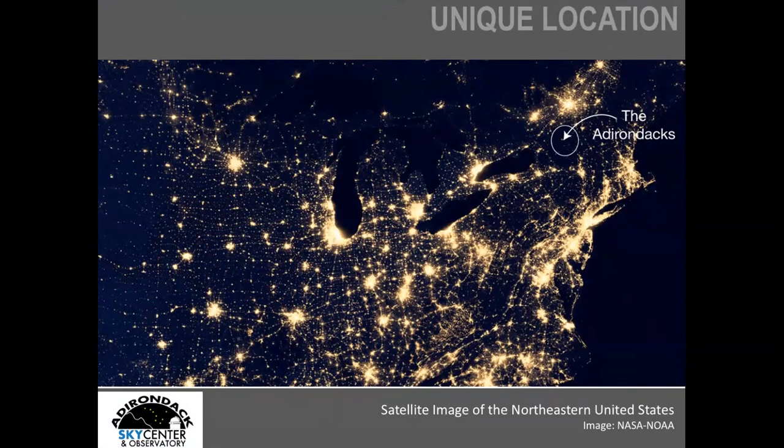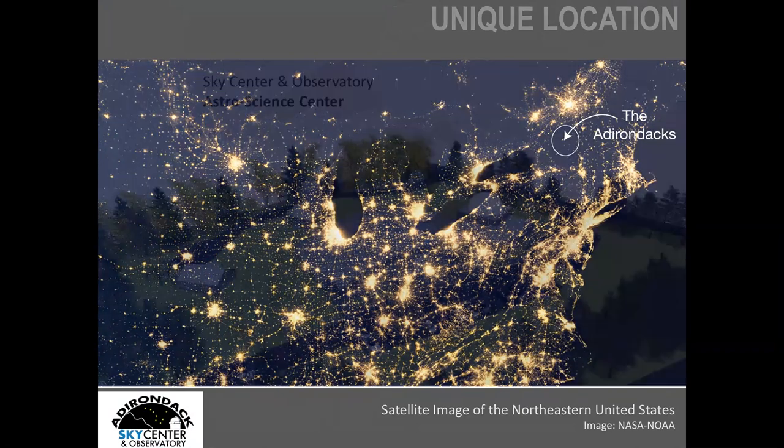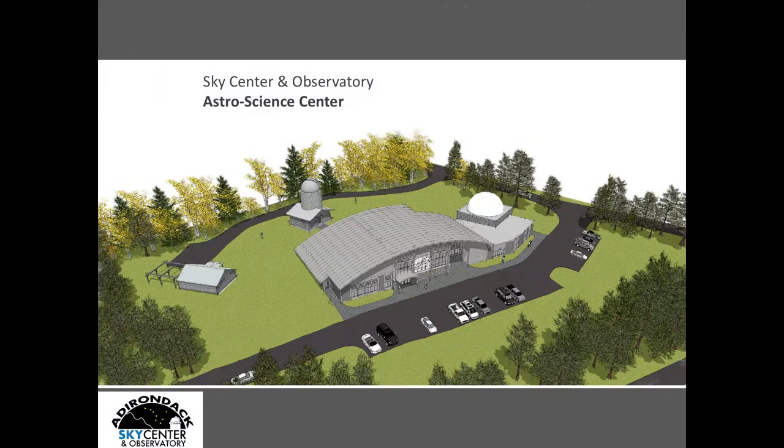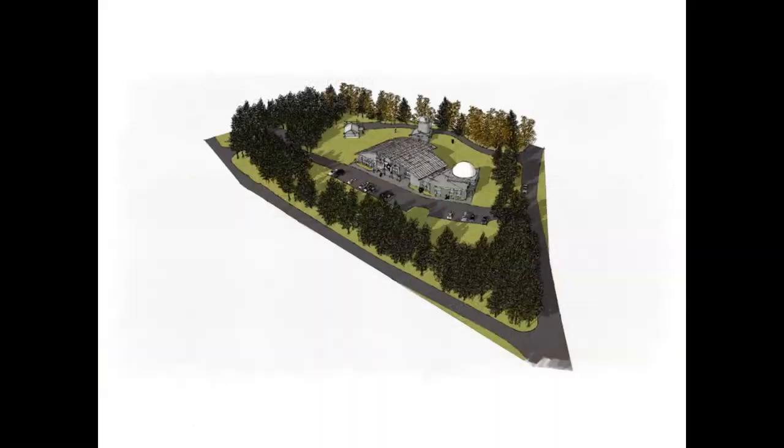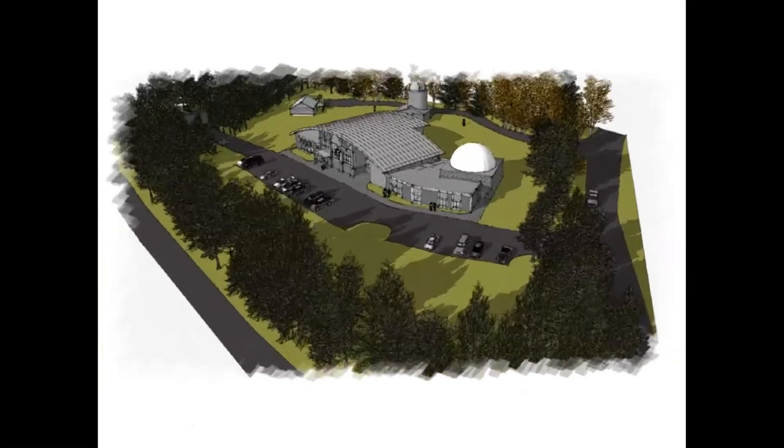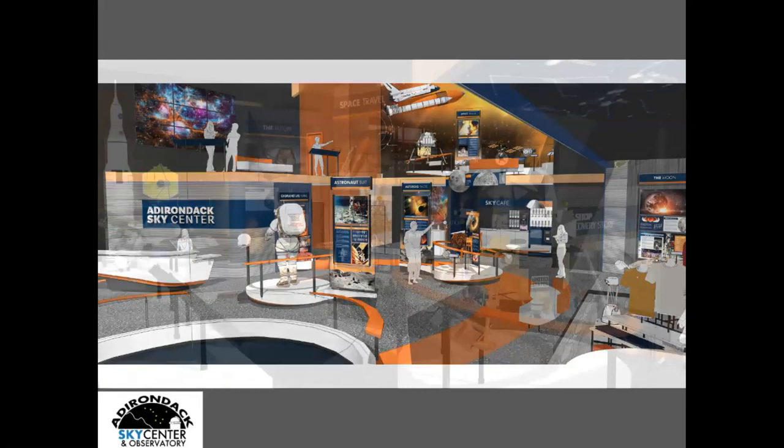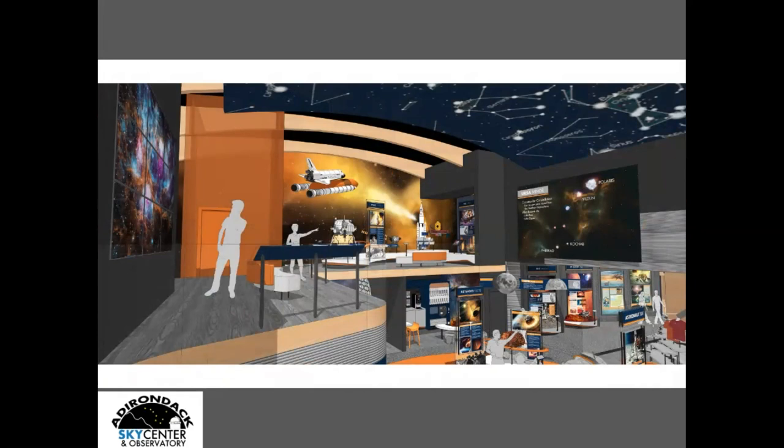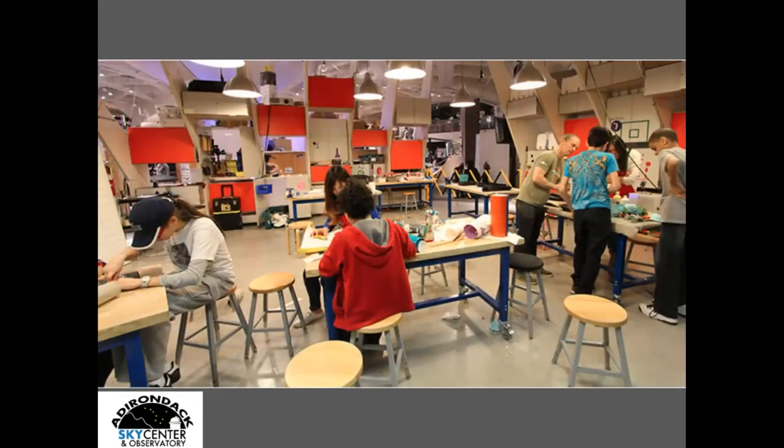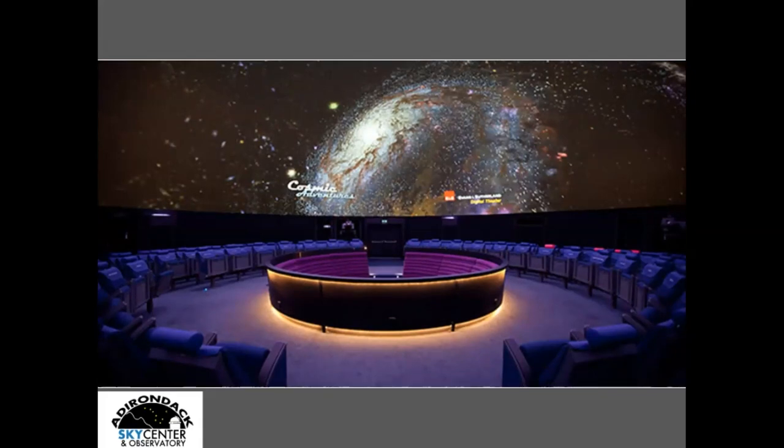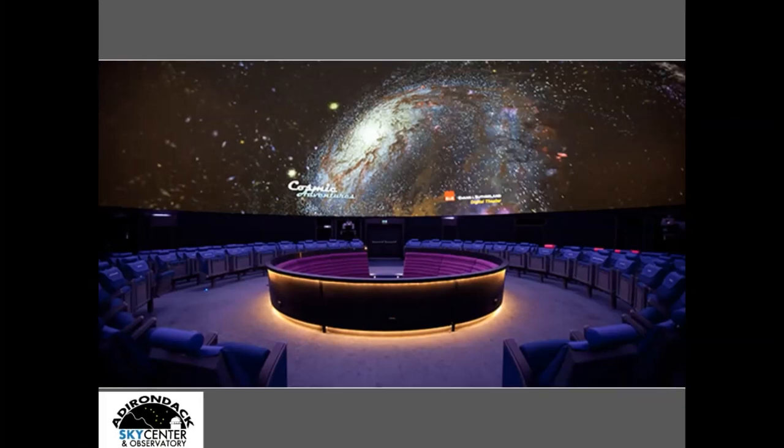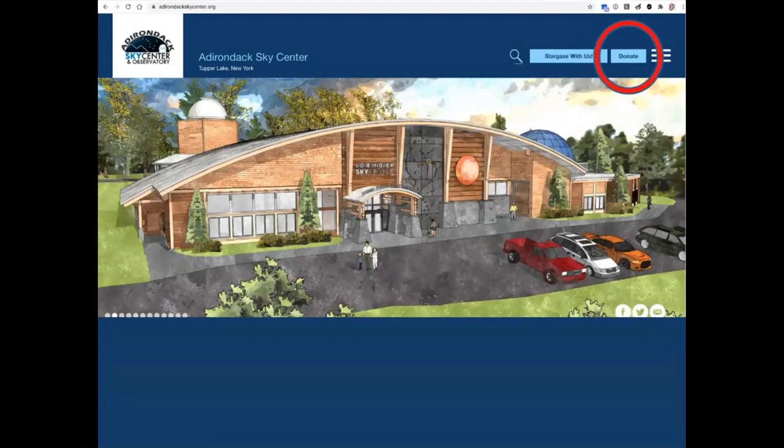For those of you who might be new to the Adirondack Sky Center and Observatory, you'll notice our location is perfectly suited for astronomy, given our Class 4 border skies, but it doesn't stop there. The Astro Science Center is currently under development and will become an important destination for all ages in the future. We invite you to be part of this exciting future by becoming a member of the Adirondack Sky Center and Observatory, and consider a gift to help make the Astro Science Center a reality by clicking on the link on our website.